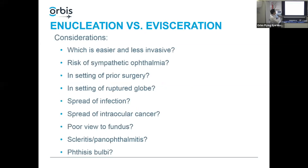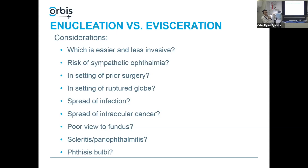Let's ask a few questions. Which is easier and less invasive? Evisceration is easier - you don't have to detach the muscles, it's a quicker surgery. How about risk of sympathetic ophthalmia? Evisceration has a slight theoretical risk of sympathetic ophthalmia, even though it's extremely rare. In the setting of prior incisional intraocular surgery - like vitrectomy, PKP - some colleagues feel that since the antigens of the eye have come out once, maybe we don't want to open the eye and expose them again, though there's not huge evidence for that.